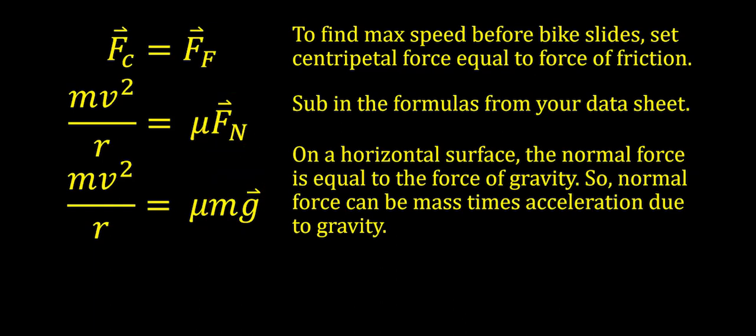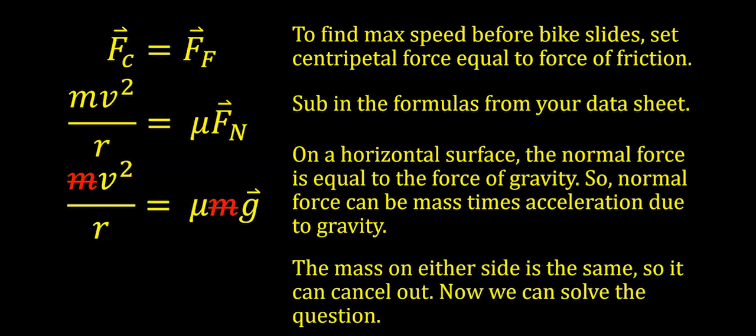You'll notice there's a mass on either side of the equation — the exact same value — so those masses cancel out. Now we can simplify: V squared divided by the radius of the circle equals the coefficient of friction multiplied by the acceleration due to gravity.